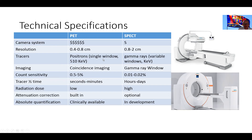For tracers, PET uses positron emitters with a single window of 511 keV, versus SPECT which uses gamma rays with a variable window to accommodate the tracer being used. On the imaging side, PET uses coincidence imaging while SPECT uses gamma ray windows. Count sensitivity is very important because higher counts give more resolution and more accurate images, and PET has much higher count sensitivity than SPECT.